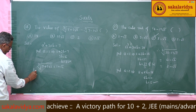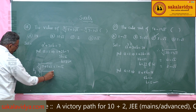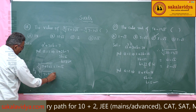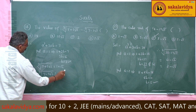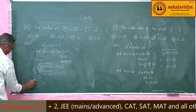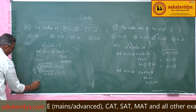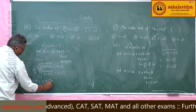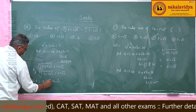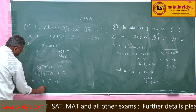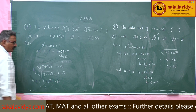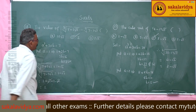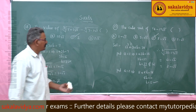Similarly, cube root of (7 - 5√2) becomes 1 - √2. Now the given expression becomes (1 + √2) + (1 - √2). The √2 terms cancel, and we get 2. Since 2 is the answer, option c is the right option.